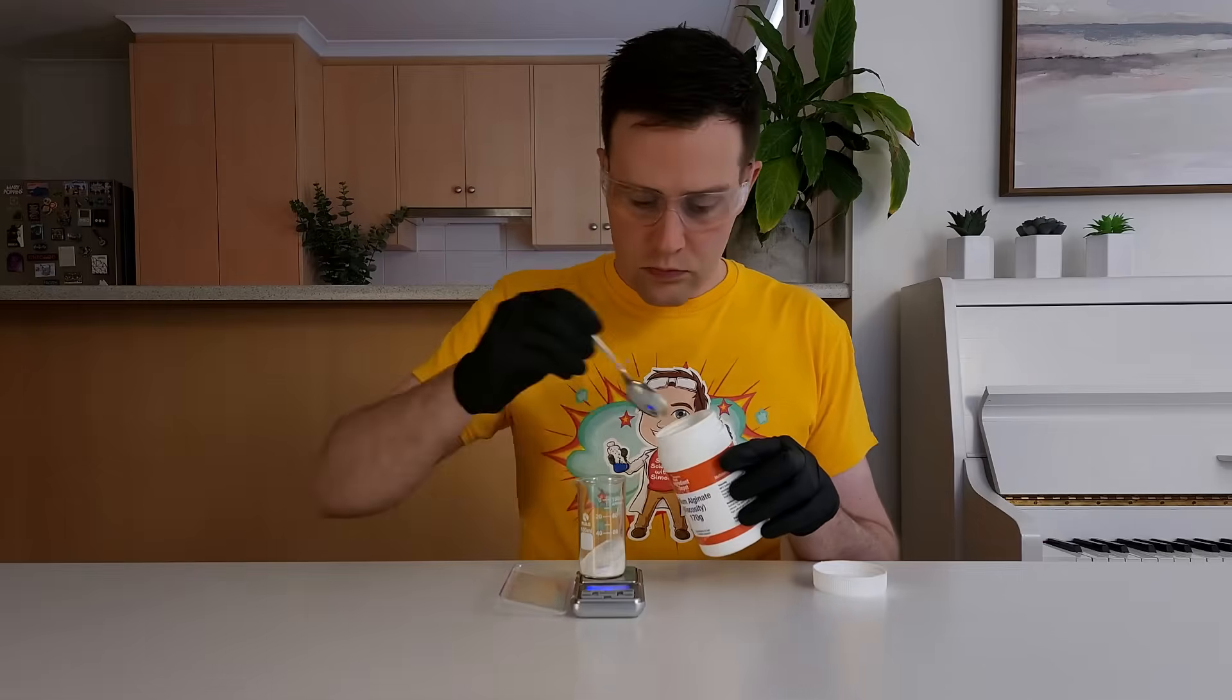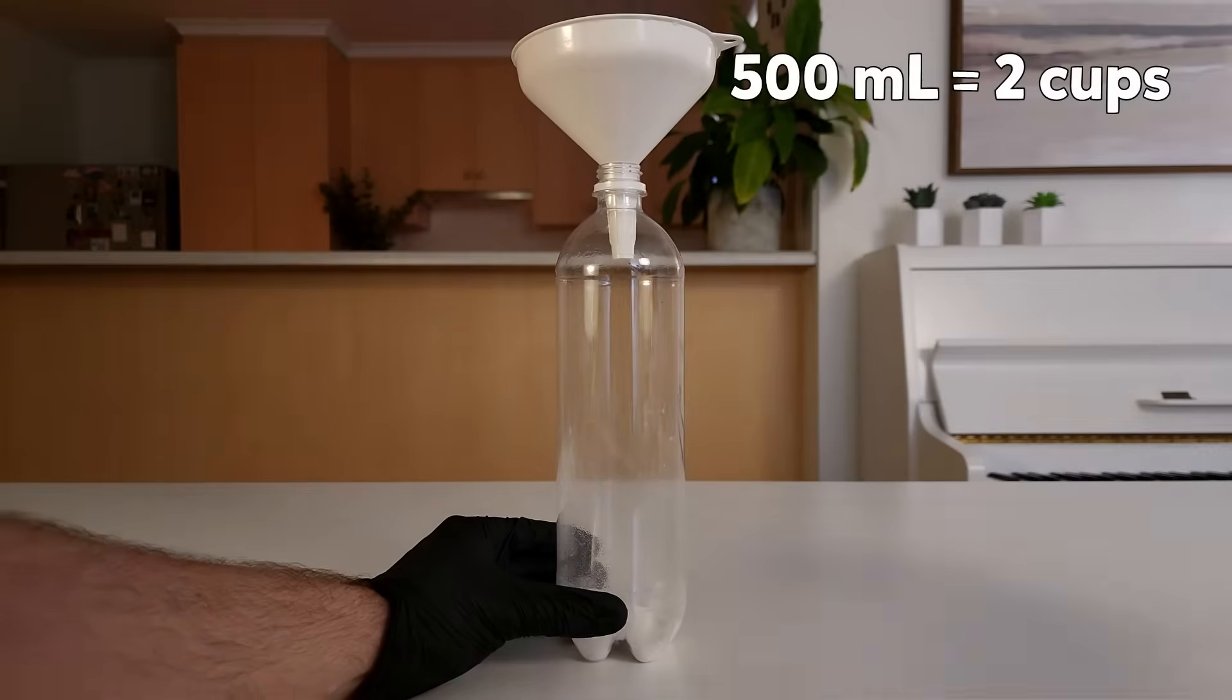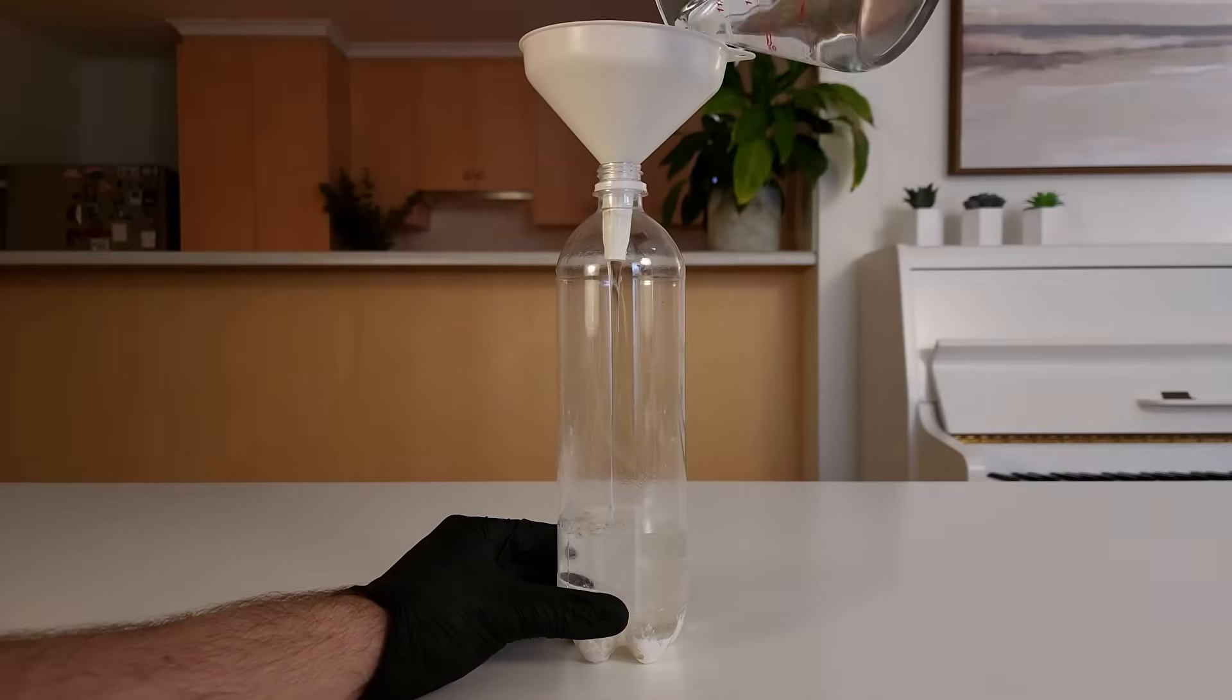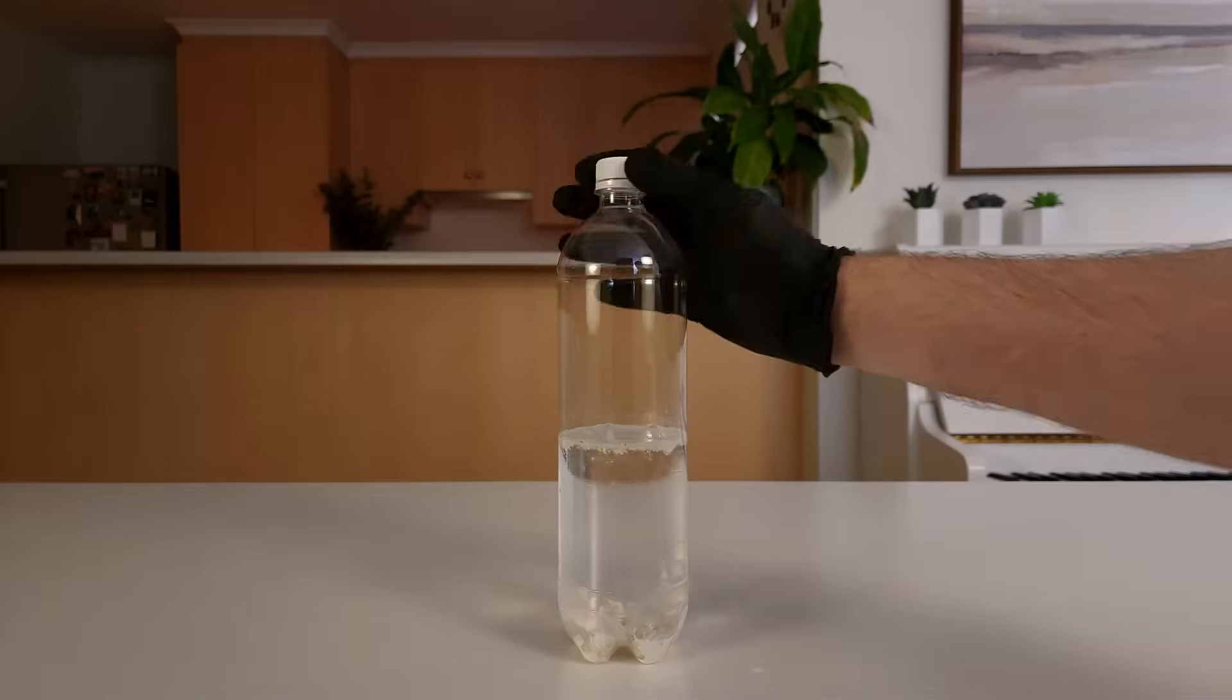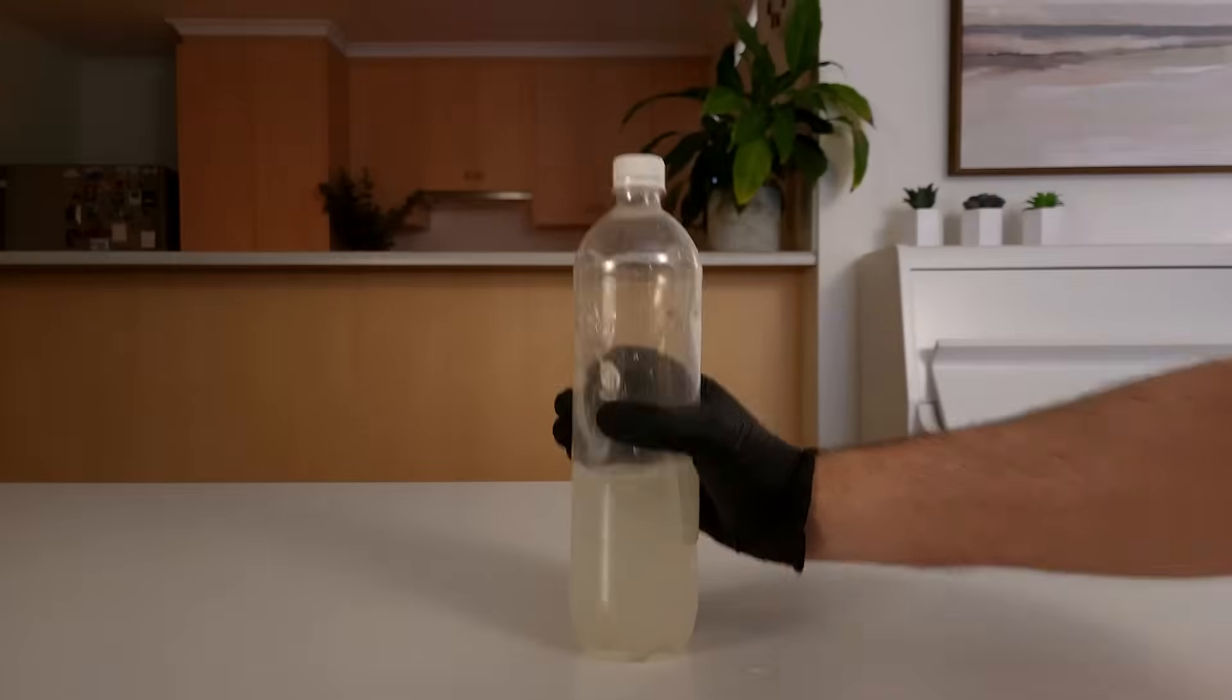First, ask an adult to carefully weigh out 10 grams of sodium alginate. This is about 4 teaspoons. Then place the sodium alginate in a bottle and add 500 ml of water. It will probably start clumping together, so add the lid and give it a really good shake. I had to shake the bottle for 30 minutes to get most of the sodium alginate to dissolve in the water.